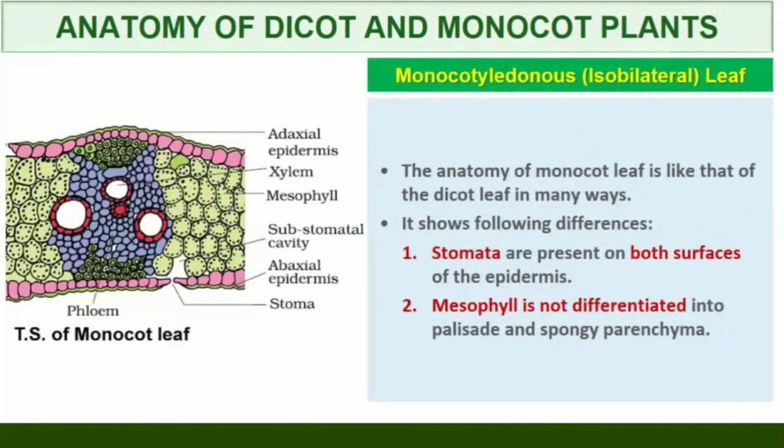Isobilateral Leaf or Monocotyledonous Leaf. The anatomy of isobilateral leaf is similar to that of the dorsiventral leaf in many ways, but shows the following characteristic differences. In an isobilateral leaf, stomata are present on both surfaces of the epidermis, and the mesophyll is not differentiated into palisade and spongy parenchyma.